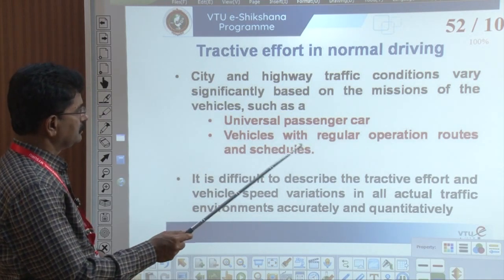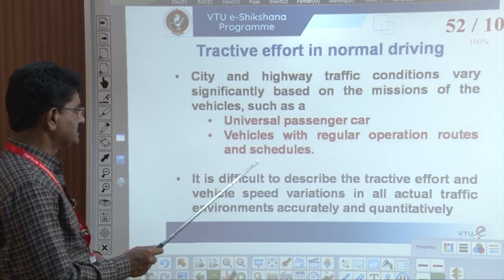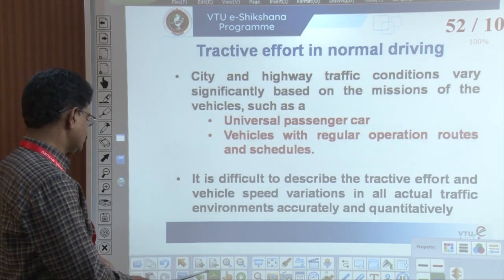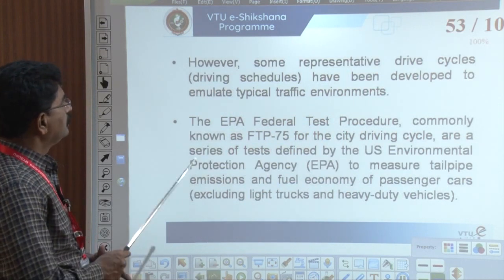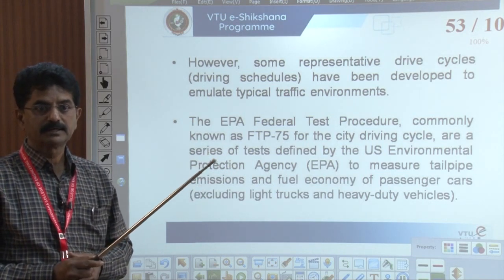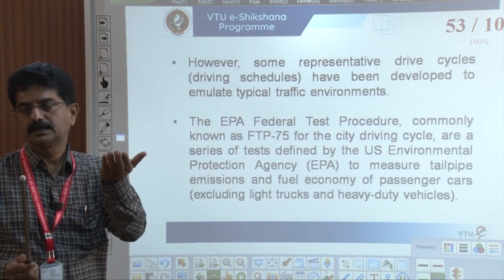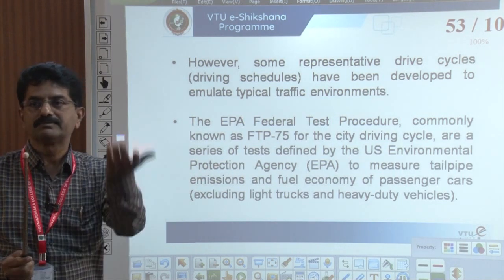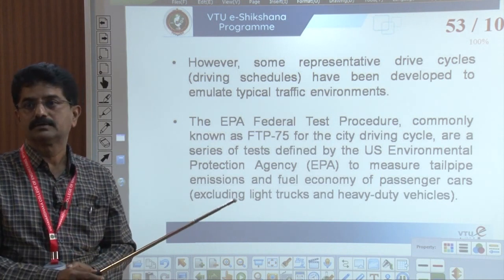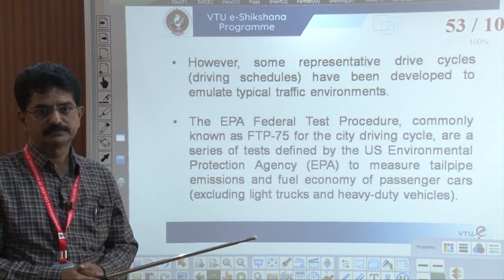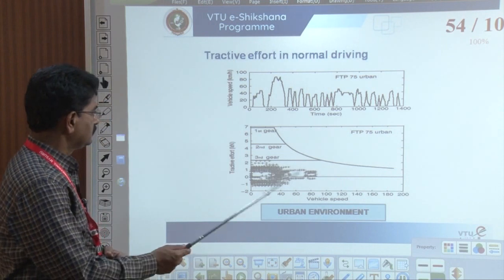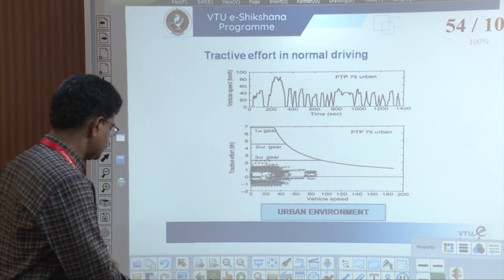These variations are associated with the traffic environment and type of vehicle. City and highway traffic conditions vary greatly. Some representative drive cycles have been developed to emulate typical traffic environments. When traffic varies, the load of the vehicle varies, the torque varies, and ultimately the speed of the vehicle depends on the traffic — in urban areas we need to operate various gears as conditions change.